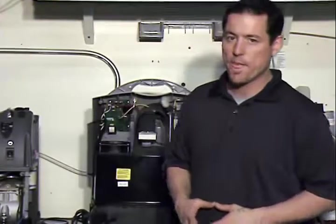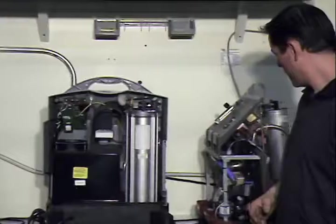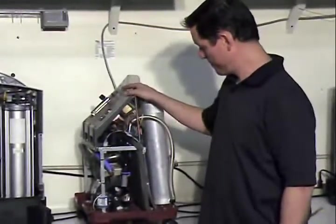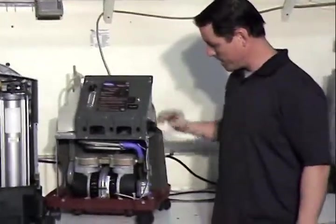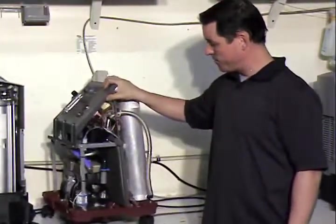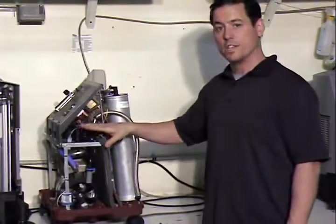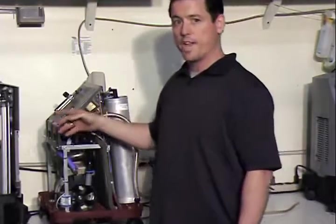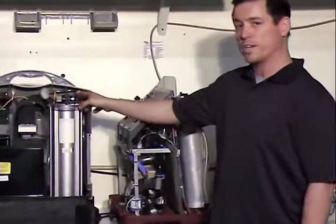So first off, inside your concentrators, each one will have a compressor. Right here on this one, we've got a compressor right here. Inside most concentrators, you've got four-way directional valves. You've got a four-way directional valve here and then also over here on this one, you've got another four-way directional valve.